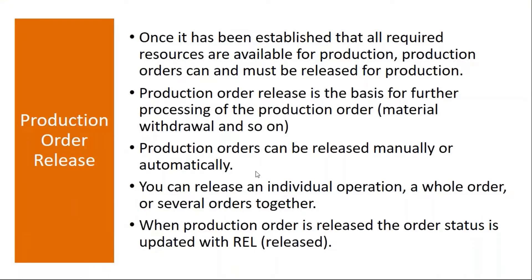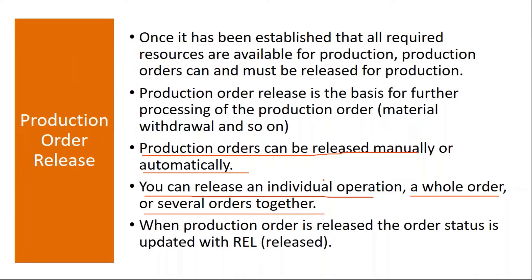Production orders can be released manually or automatically — I will show both in the system. There are many methods: you can release an individual operation, a whole order, or several orders together. You can release a single order or multiple orders at once, or even operation-by-operation. When the production order is released, the order status is updated with REL — released. We will see this in the system.